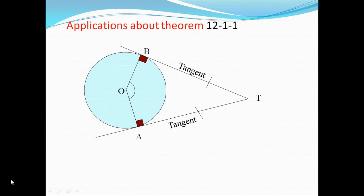Good morning, grade 9. Today we will complete lesson 1 in chapter 12. As we see here, we have a tangent intersecting with a radius at the point of tangency, which is point B, and we know that they are perpendicular to each other, so angle B equals 90 degrees. The same applies here: tangent AT intersects with radius AO forming a right angle.